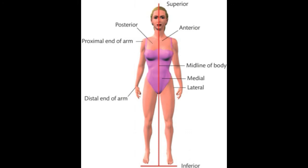The next term covers whether something is closer to or further away from the middle. Medial means towards the middle, and lateral means away from the middle. Think about language — if you run lateral in rugby, you're normally running sideways, so lateral means further from the middle. Medial is more towards the middle. Bones can be described as more lateral or more medial when describing their position or location.